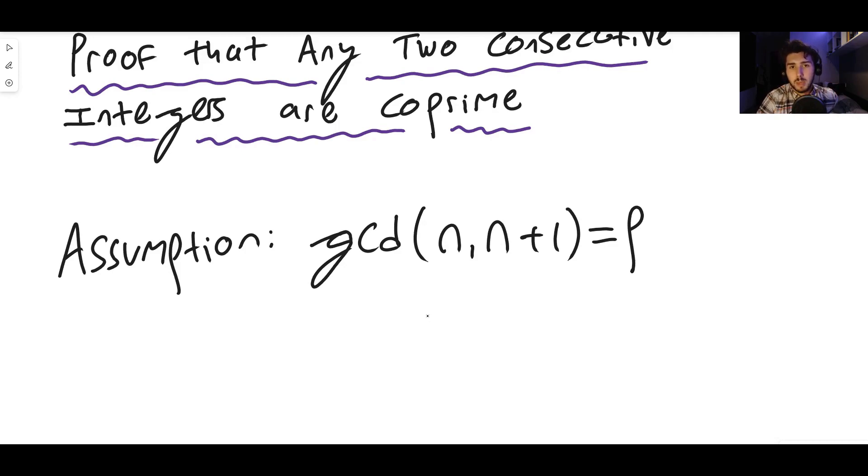We're going to assume it's p, but there's a special number that p is not allowed to be. Because of course, if p was one, their greatest common divisor would just be the number one. Now any two numbers where their greatest common divisor is the number one are just coprime still. Like five and seven, their greatest common divisor is one. They're coprime. They're prime themselves.